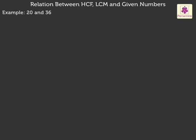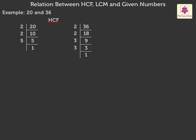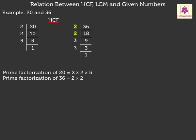First, we shall find the HCF of the given numbers by prime factorization method. Thus, the prime factorization of 20 is 2 × 2 × 5 and the prime factorization of 36 is 2 × 2 × 3 × 3. Thus, the HCF of 20 and 36 is equal to 2 × 2 which is equal to 4.